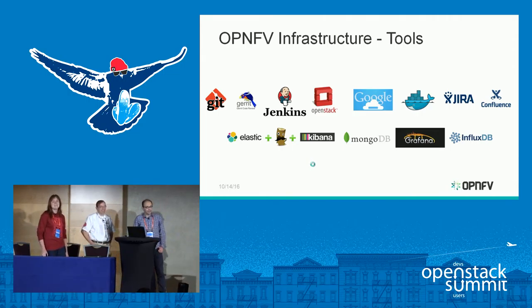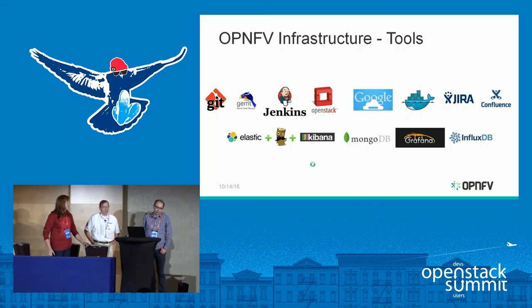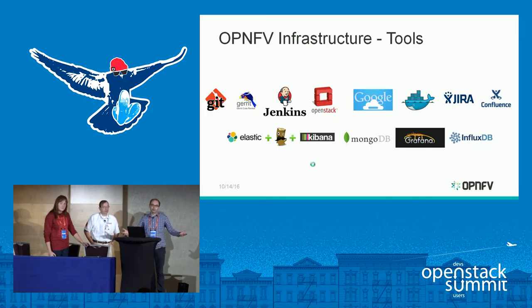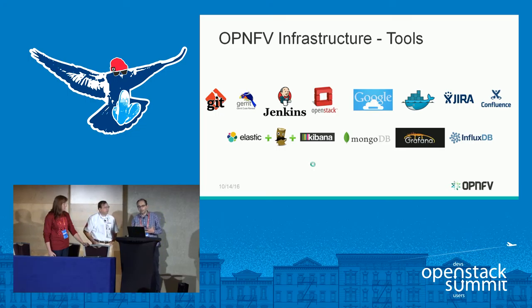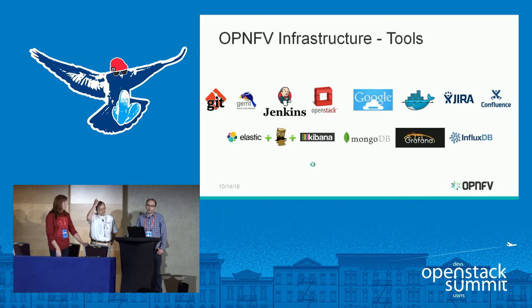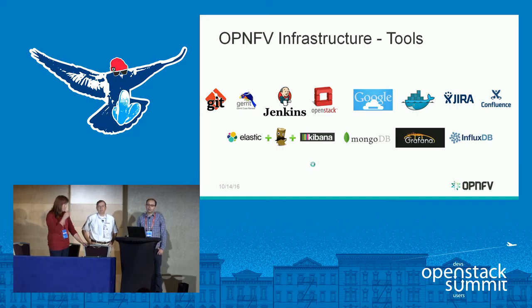The feedback time is too long. A developer contributes something to OpenStack and when we get it to OPNFV, the developer has forgotten about the code they contributed. So we want to enable fast feedback cycles between different open source communities. OpenStack is obviously the biggest community we are working with, and they have this third-party CI mechanism that allows other communities or companies to hook into their streams and get the patches.